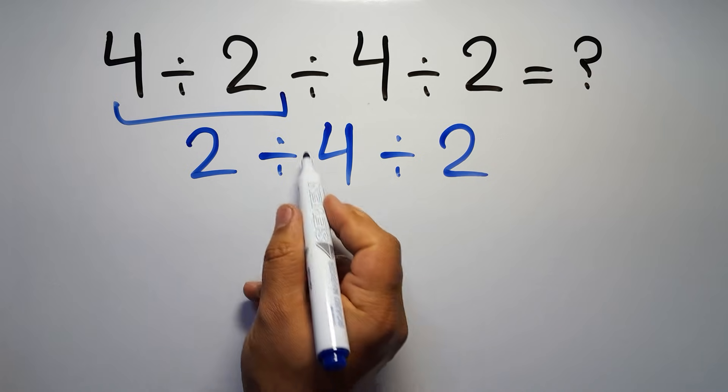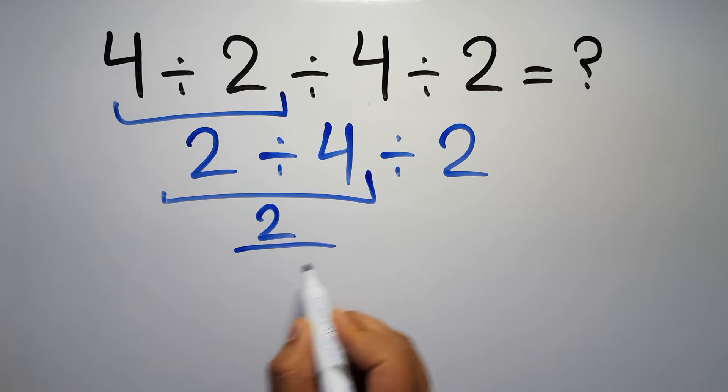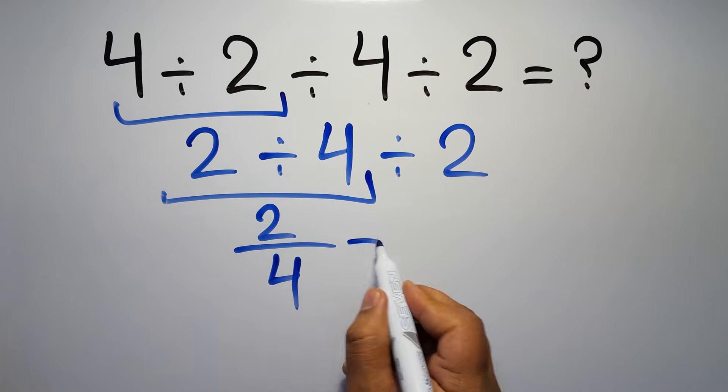We have to do this division. 2 divided by 4 can be written as 2 over 4, then divided by 2.